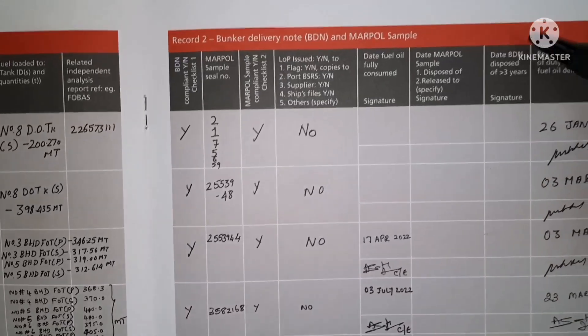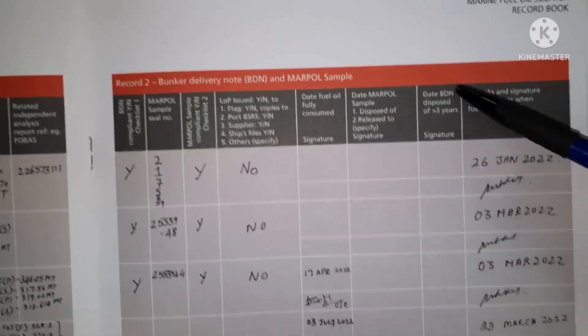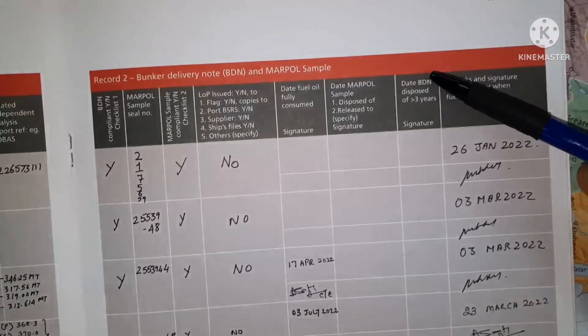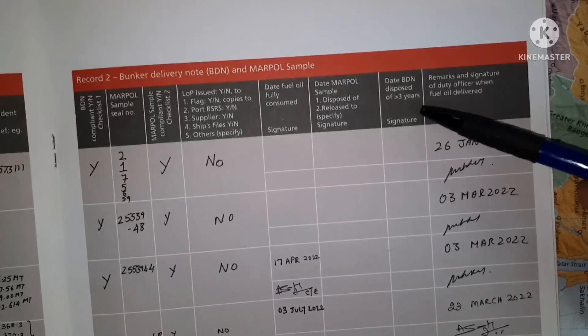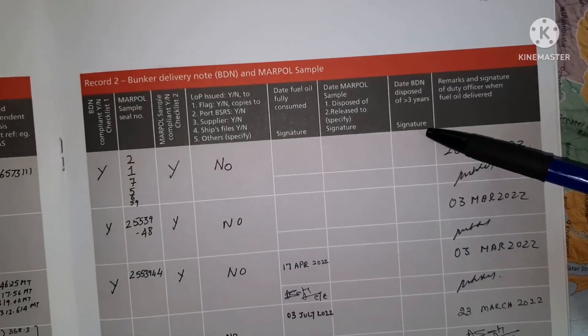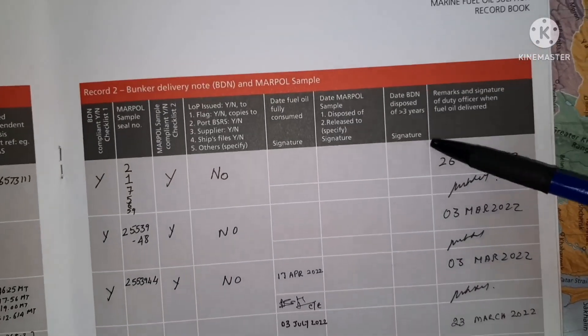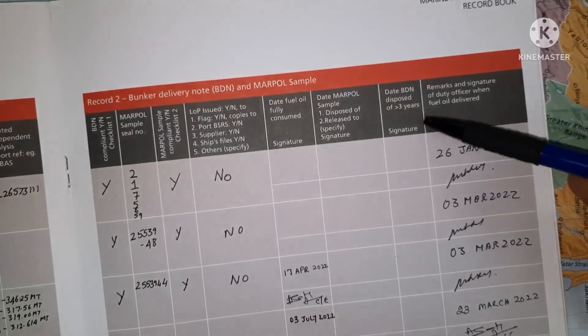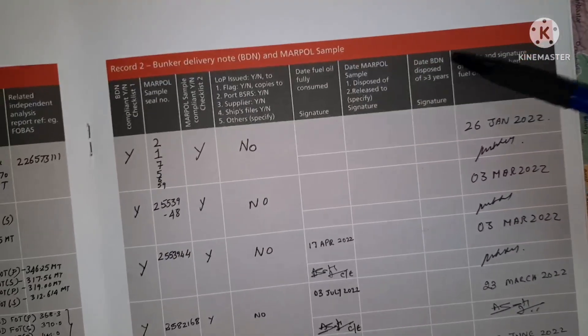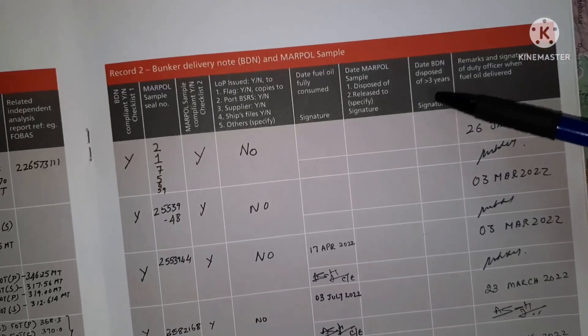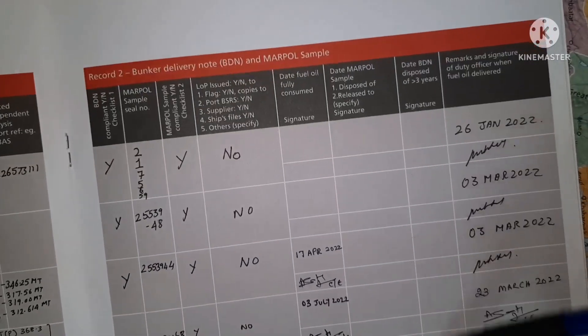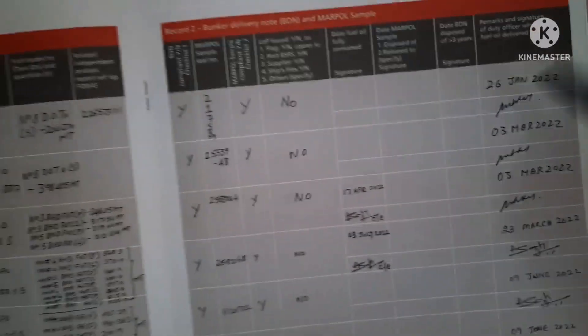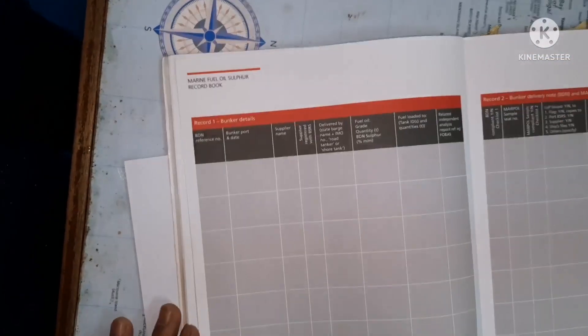The BDN — Bunker Delivery Note — should be kept on board for 3 years. If it is more than 3 years, you can dispose it, and a record of that disposal should be mentioned here. So Record 1 and Record 2 are done. Now we go to number 3.